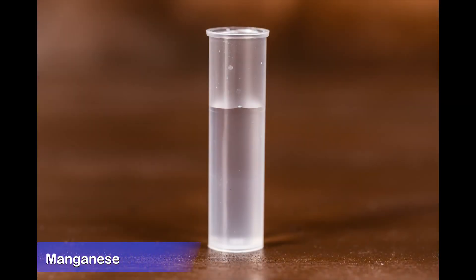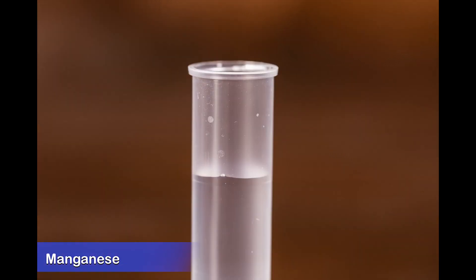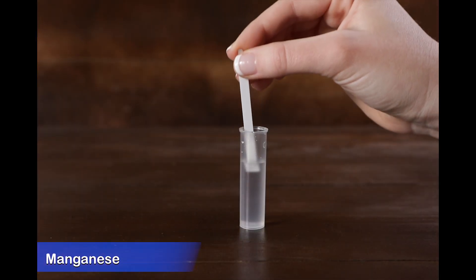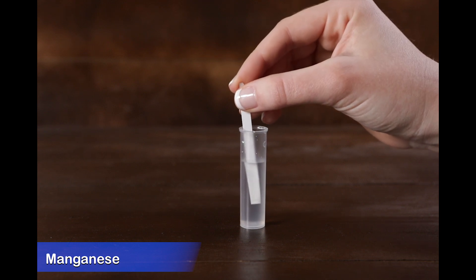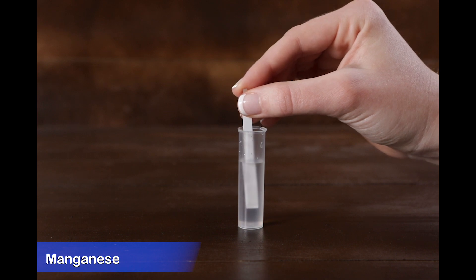The manganese test uses the large semi-clear vial. Fill the vial to the top line with water. Dip manganese strip number one into the vial for 20 seconds using a constant back and forth motion. Discard the strip.